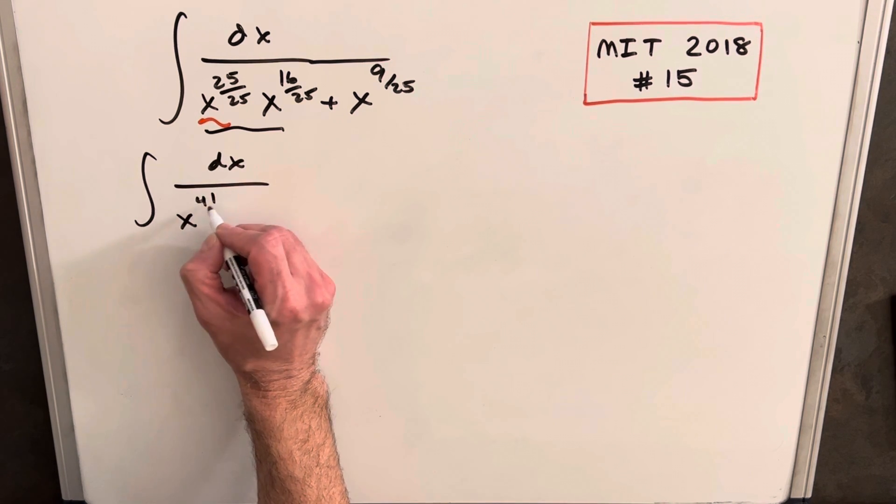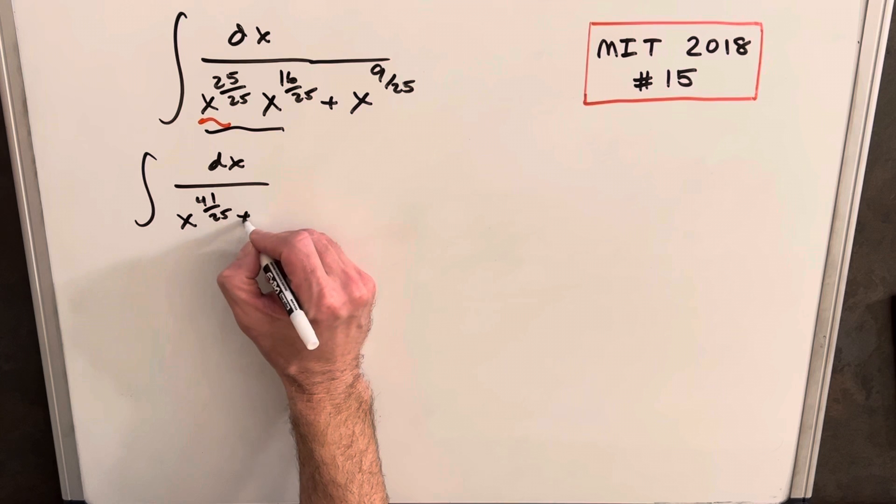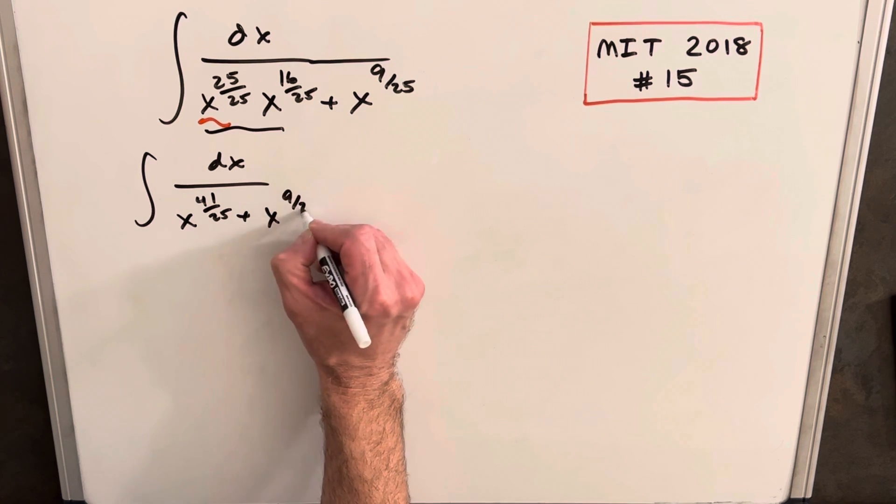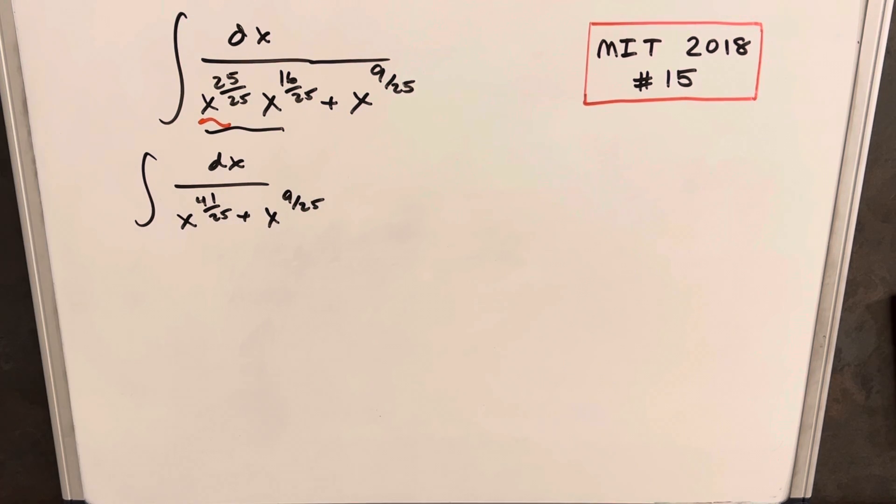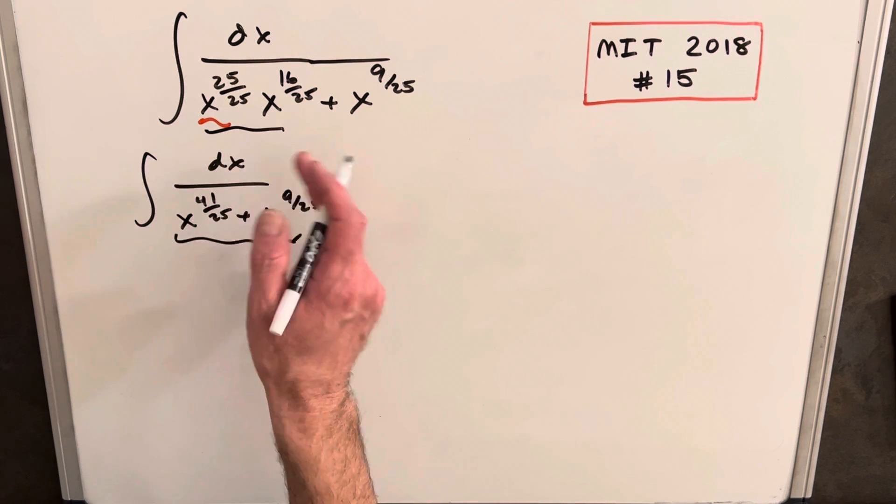I like it as x to the 41 over 25 plus x to the 9 over 25. Then we notice with integrals we usually don't like two x's in the denominator unless we had a really nice use of substitution.